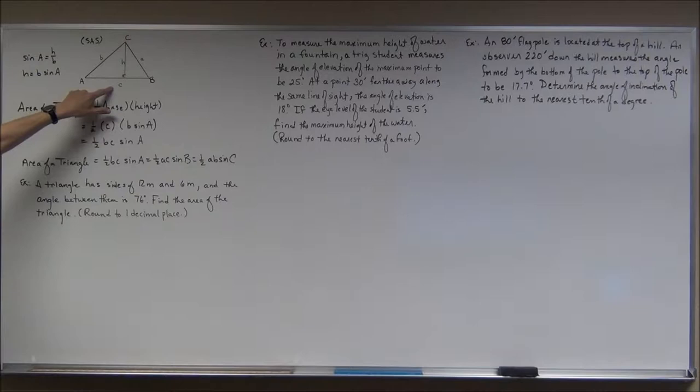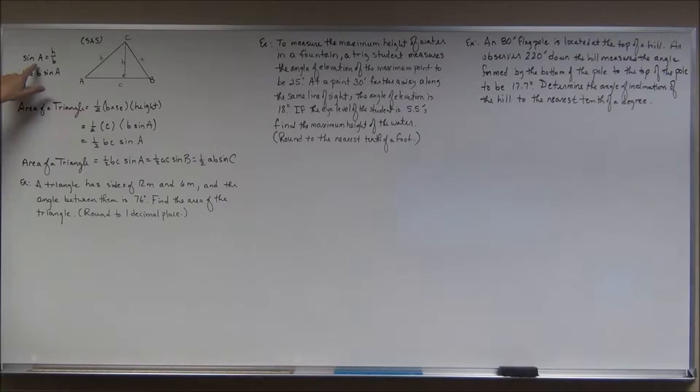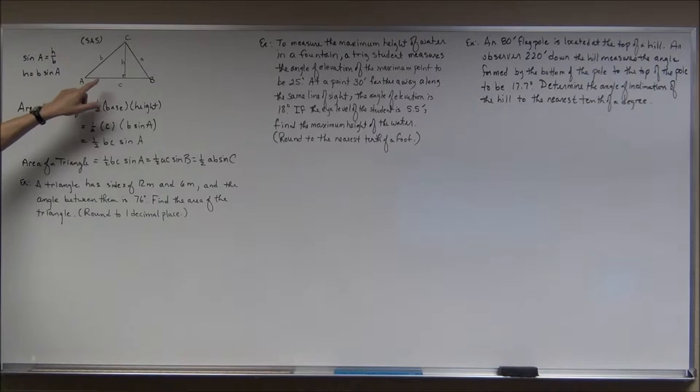If I use this drawing here, the way I've drawn it, this looks like my base because I've drawn my height to it. So my base would be C. But what's the height? That's where I use the trig function. I have a right triangle here, and I can say that the sine of angle A is equal to the height divided by side B. So sine of A equals height divided by B.